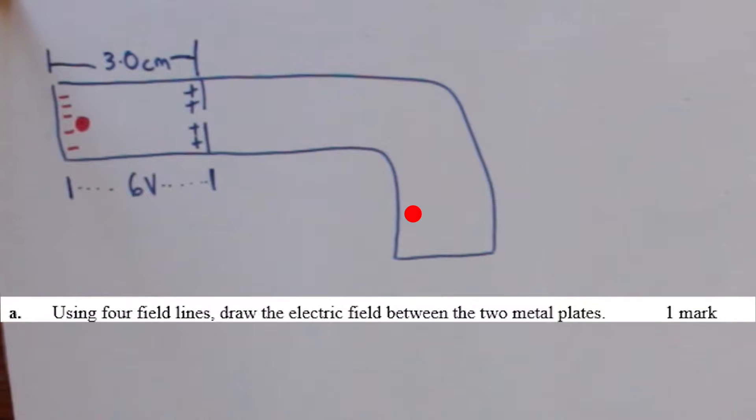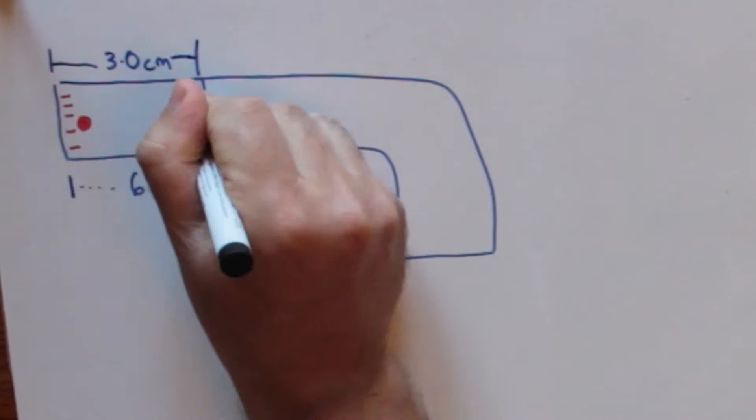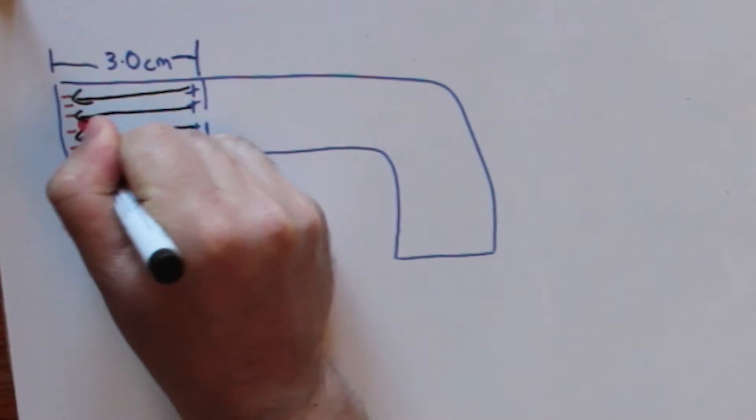Part A, using four field lines, draw the electric field between the two metal plates. The electric field lines are drawn from positive to negative.